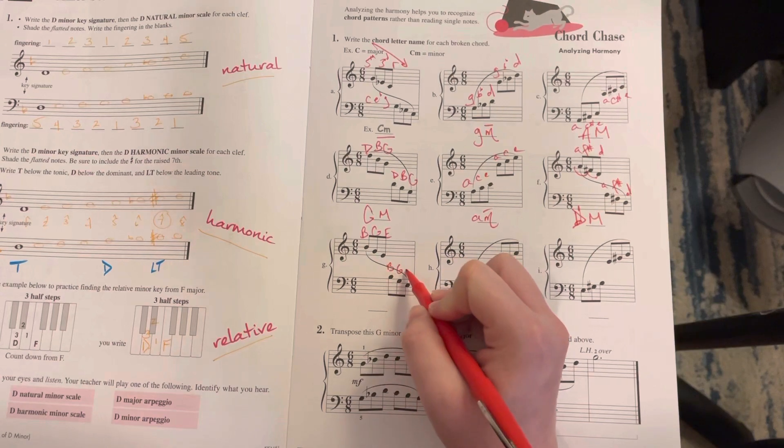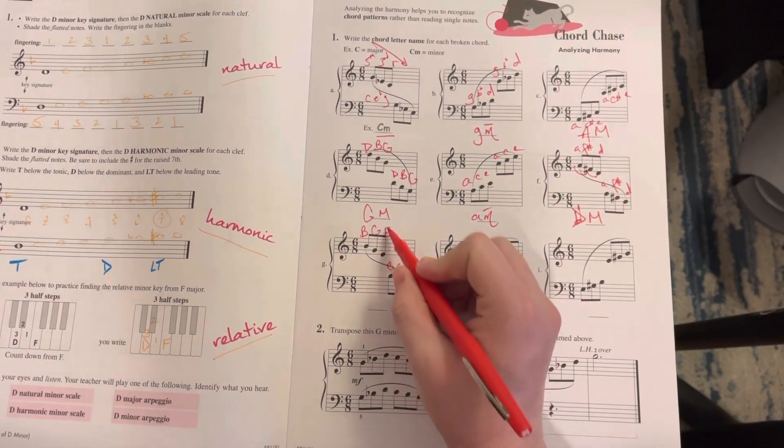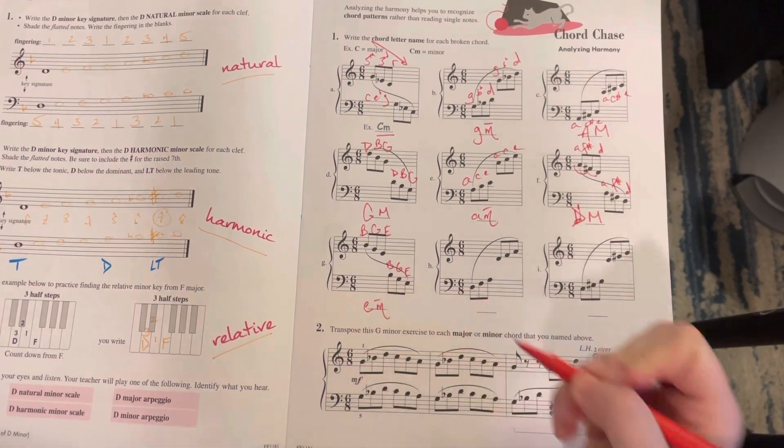Letter G we have B, G, E - that's descending. Our root is E, so it has to be E something. It's E minor.